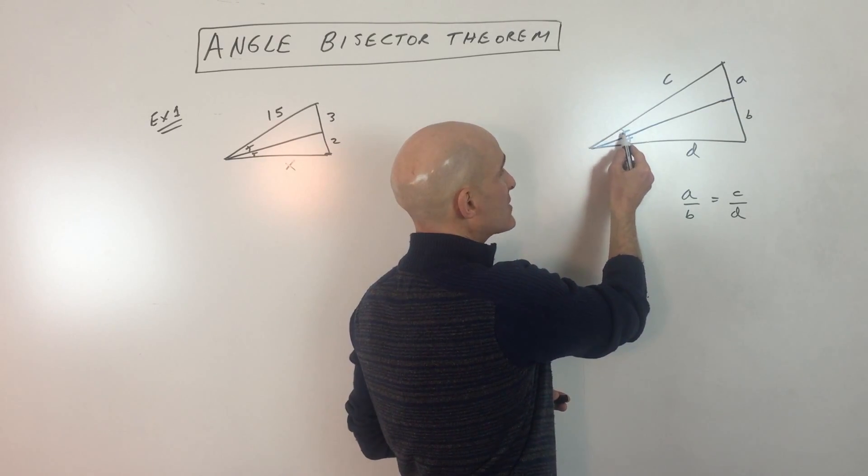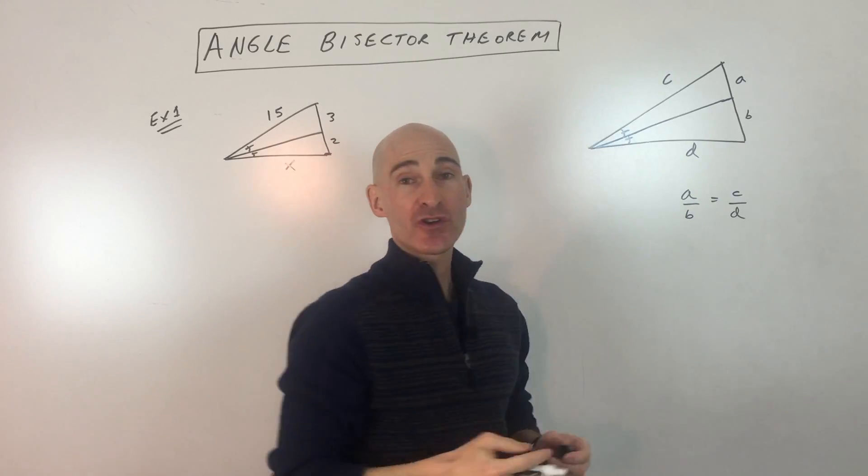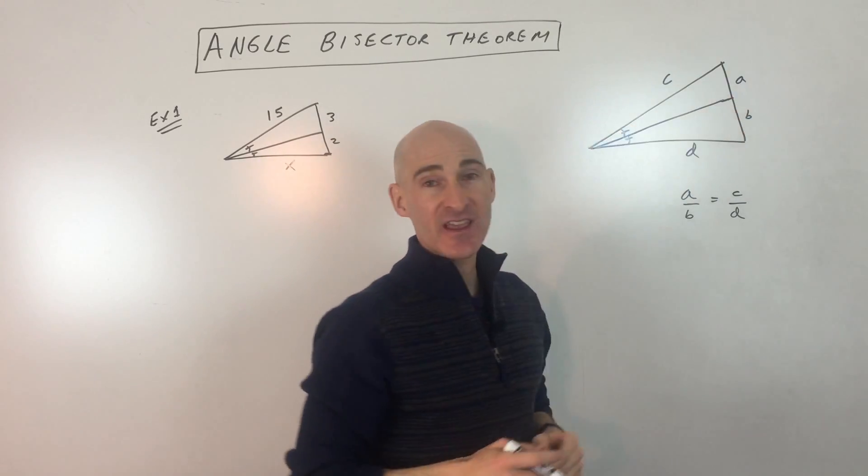And you can see that I put the same markings here and here to show that these two angles are congruent, they're equal, and so that this is, in fact, bisecting the angle.